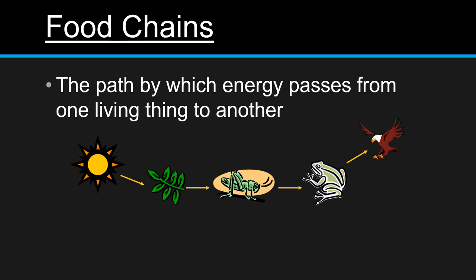A food chain is the path by which energy passes from one living thing to another. Keep in mind, this is not what eats what - this is the passage of energy. As you can see, we have the Sun being our starting point. The energy is transferred to the plant, the plant is eaten by the grasshopper (energy transfer), the grasshopper is eaten by the frog (energy transfer), and then finally the hawk is going to eat the frog and get the energy transfer.